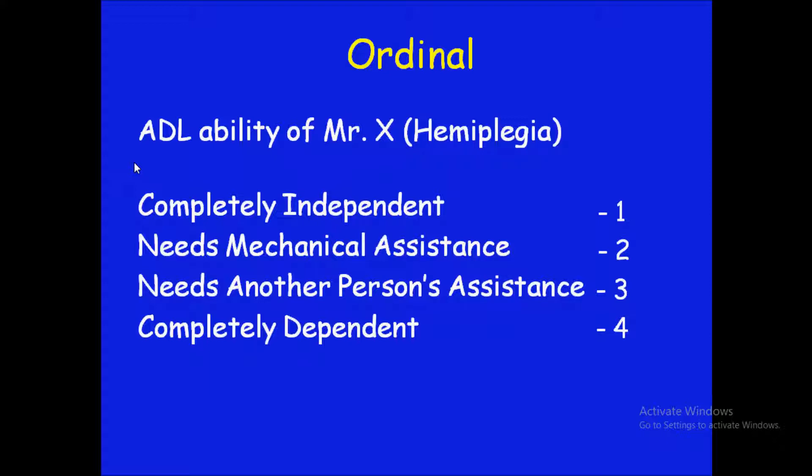That is why ordinal scale is better than nominal scale — it has magnitude — but it does not possess equal intervals or absolute zero. This is called ordinal scale. Next, we will see the third level of measurement, which is the interval level of measurement.